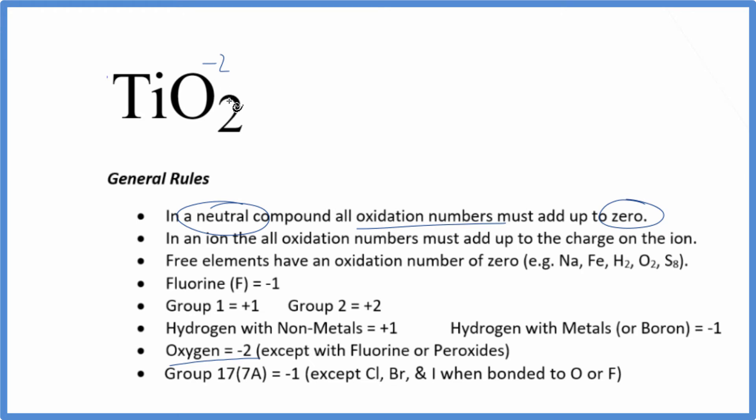2 times minus 2, that's minus 4. The titanium has to be plus 4 for this all to add up to zero. 2 times minus 2, that's minus 4, and the plus 4, that adds up to zero.